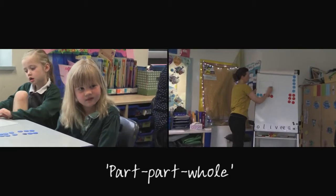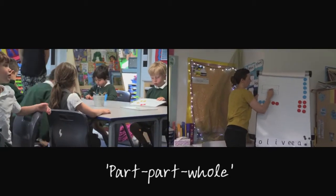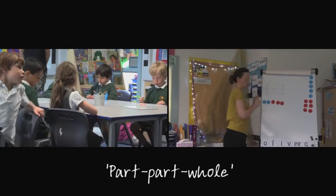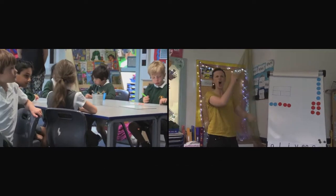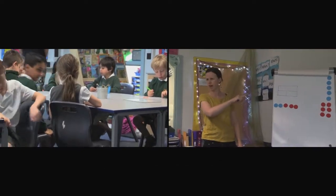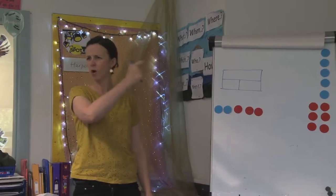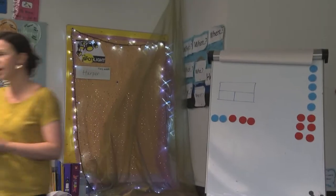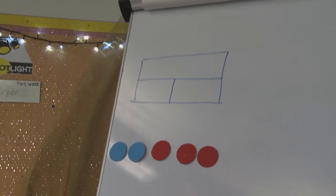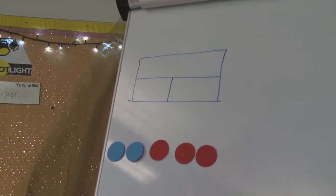I'm going to ask you all to do a part-part-whole. What was the whole number of cars and what are the two parts? Off you go drawing your part-part-whole and talk about it with your partners.